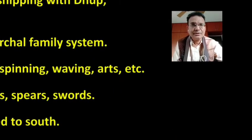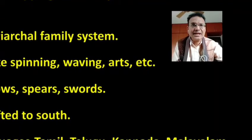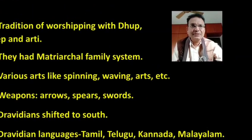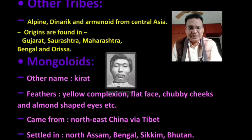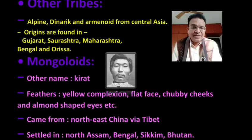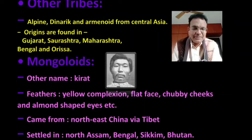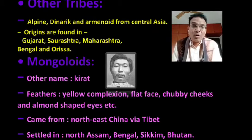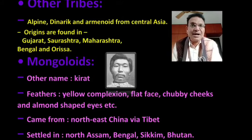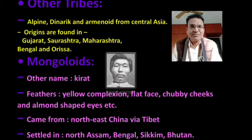Apart from that, other tribes we can see here are Mongoloid, Alpine, Dinarik, and Armenoid. They all came from Central Asia and generally their origins today are found in Gujarat, Saurashtra, Maharashtra, Bengal and Orissa.